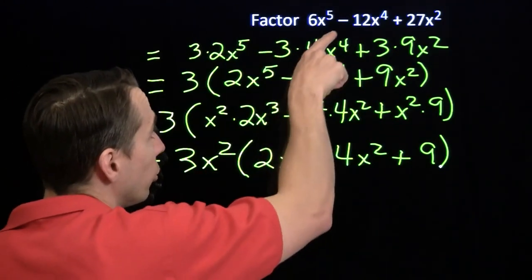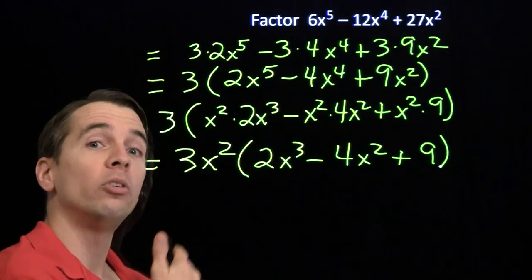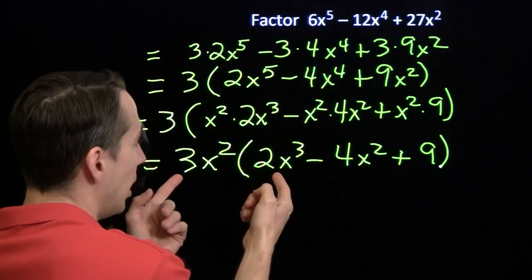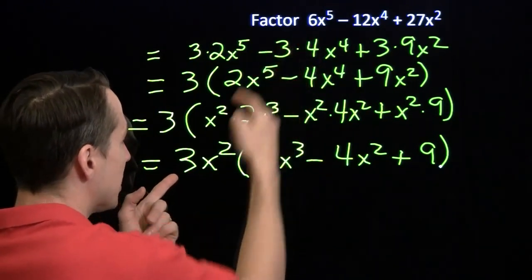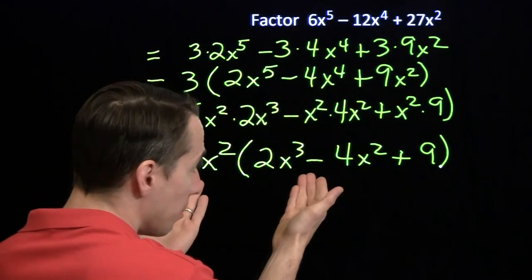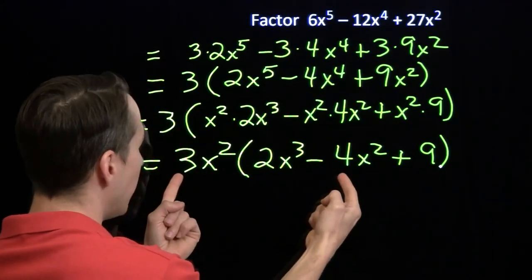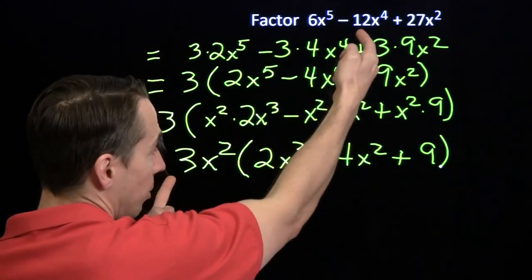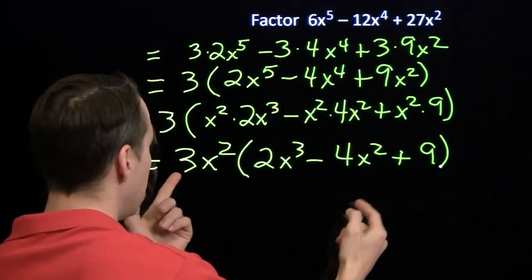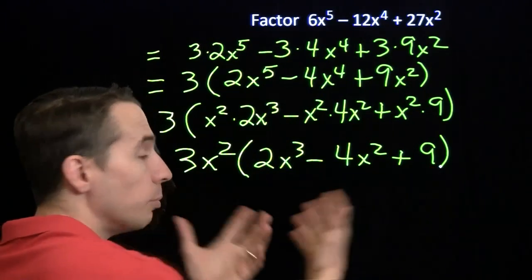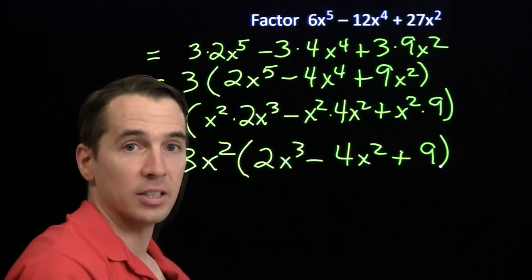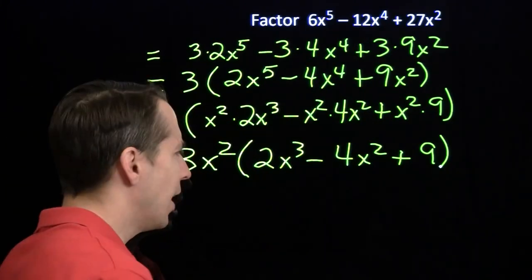Now with some practice, you'll jump straight from here to here. And you'll still always be able to check yourself by multiplying it back out. 3x squared times 2x cubed, 3 times 2 is 6, x squared times x cubed is x to the 5th. 3x squared times the minus 4x squared, 3 times minus 4, there's our minus 12, x squared times x squared, that gives us x to the 4th. And finally, 3x squared plus 9, multiply those together, 3 times 9 is 27, we get 27x squared. So we've got that factorization now.